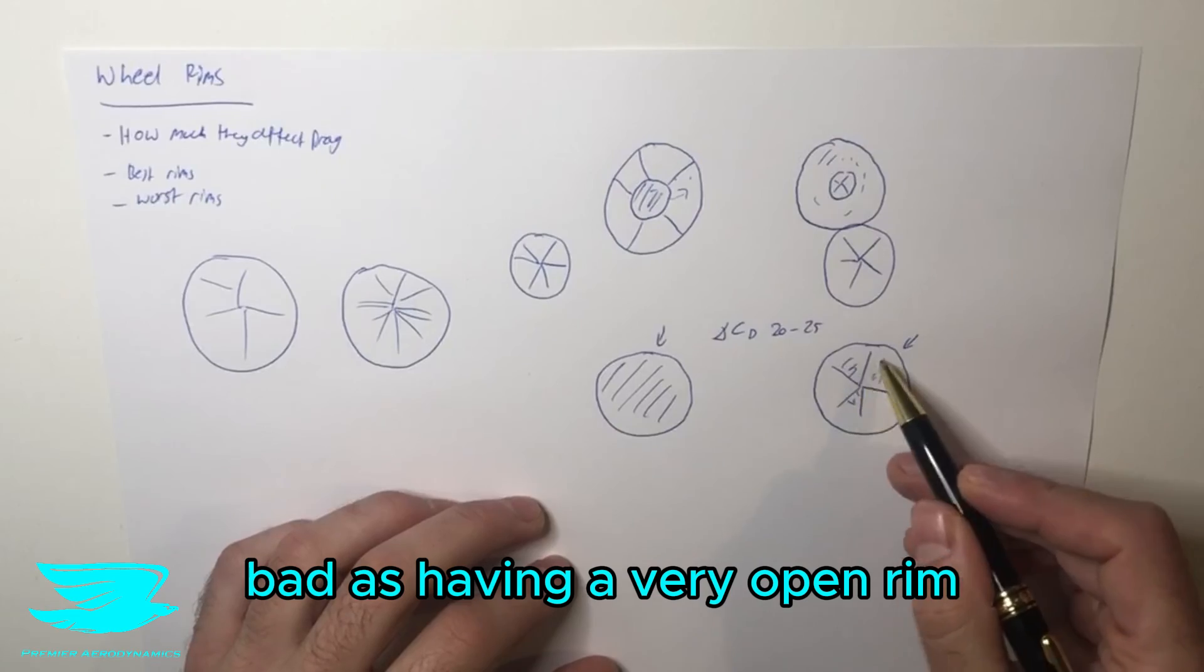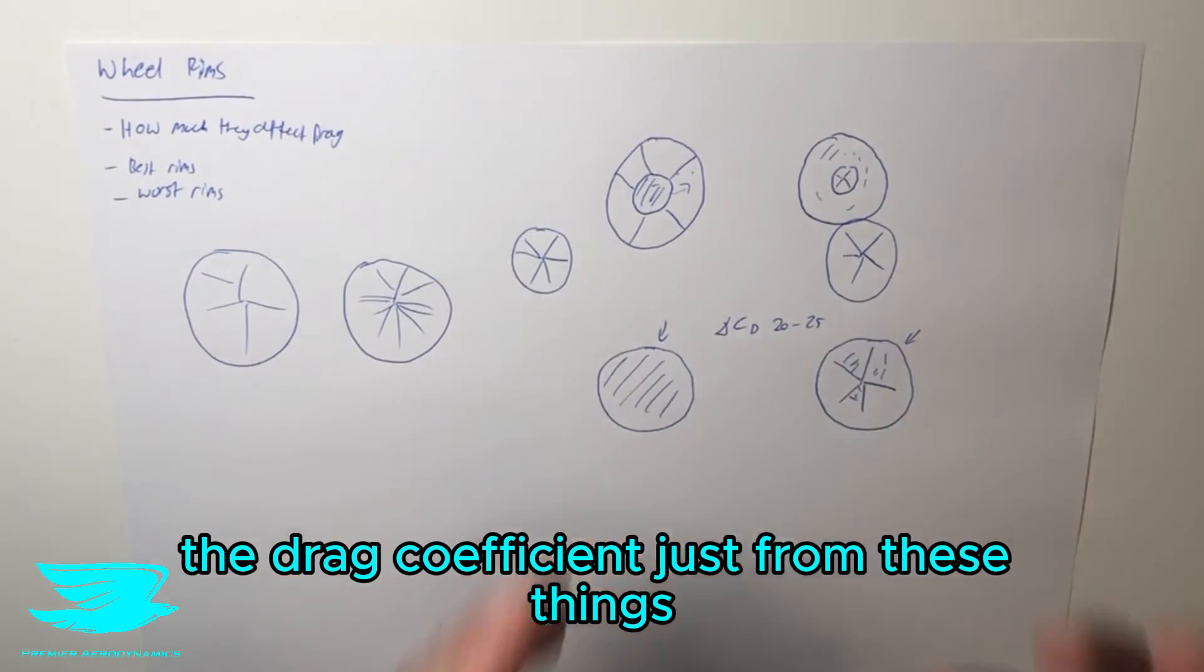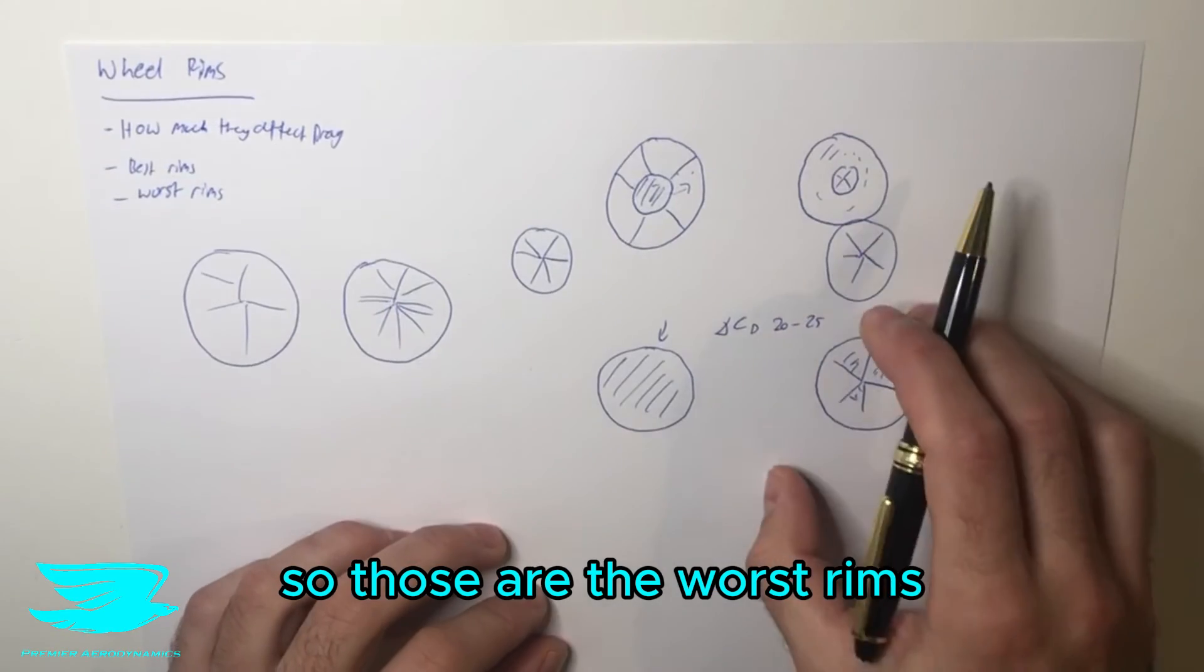My research showed that having the turbine fan rims, even though they have quite a lot of coverage area, they're actually just as bad as having a very open rim, and you're getting like a 20-count increase in the drag just from these things. So those are the worst rims.